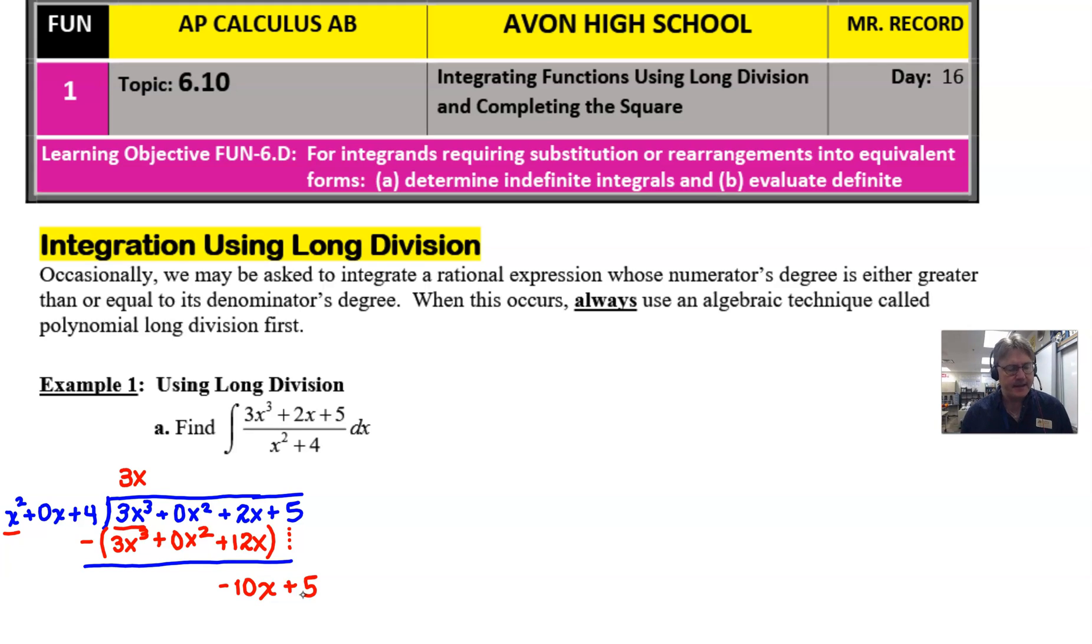So when we do that, we end up with 0, 0, and then 2x minus 12x is negative 10x. You're going to go ahead and bring down the next term. In this case, we only have a plus 5. And then you would normally repeat the process. But in this case, you can't repeat the process. You cannot continue. You are done dividing because your divisor is a power of 2, and what's left here is a power of 1. So once that happens, this is actually going to serve as your remainder.